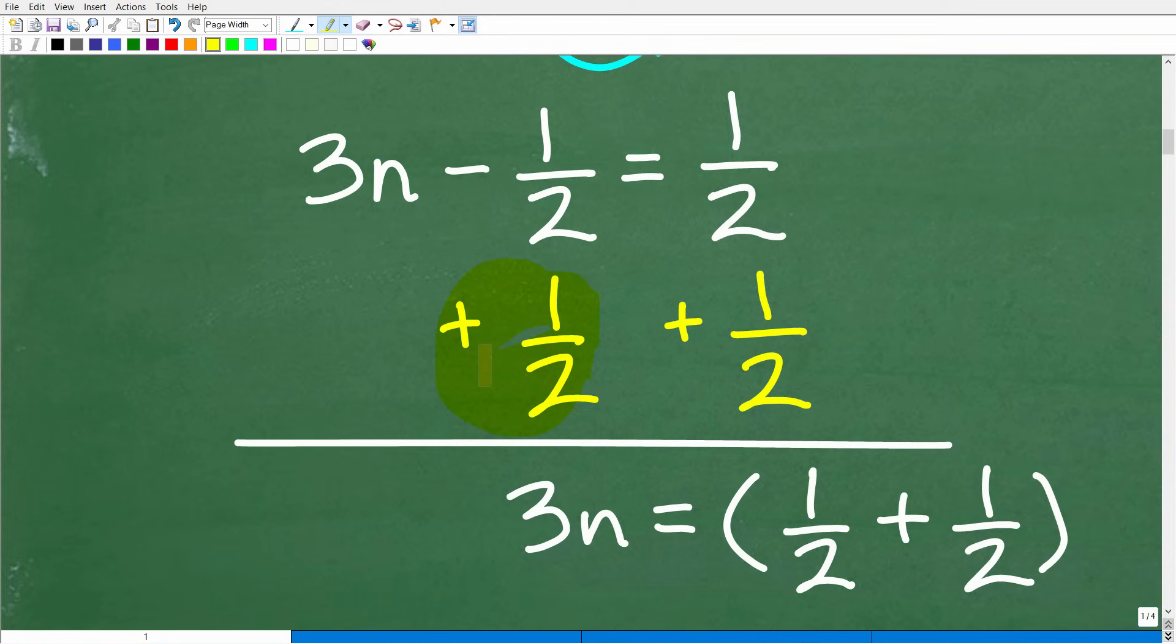But remember the golden rule of algebra, if I decide to add a 1 half over here, I've got to do the same thing to the other side. Remember, whatever you do on one side of the equation, you've got to do equally on the other, and that could be adding, subtracting, multiplying, or dividing.